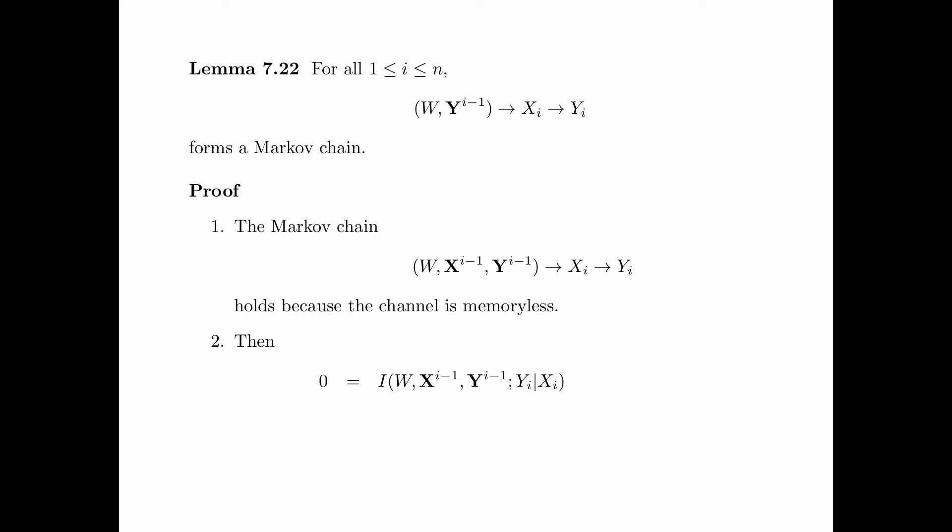The proof goes as follows. From the Markov chain in step one, we have that the mutual information between W, X^(i-1), Y^(i-1) and Y_i, conditioning on X_i, is equal to zero. For the ease of visualization, we temporarily cover X_i, the conditioning random variable.